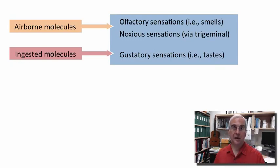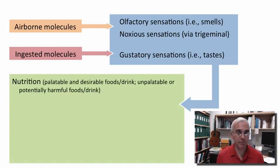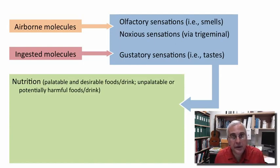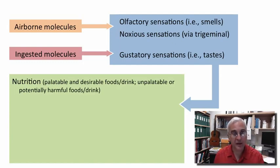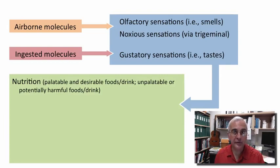In addition to feeding behaviors, these chemical sensory systems provide a number of important functions, beginning with nutrition. These systems allow us to assess the palatability or desirability of foods and drinks that we consume. This is quite important — as we sample the foods of the world, we are always on guard for the palatability of food, trying to avoid potentially harmful substances.